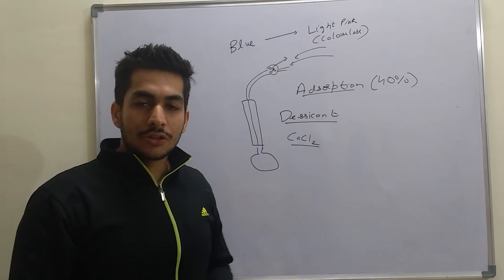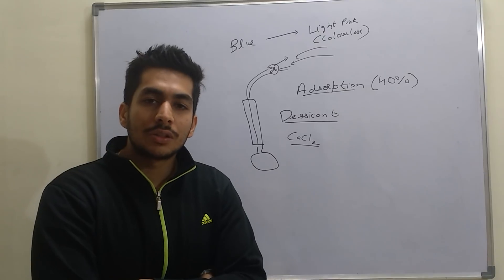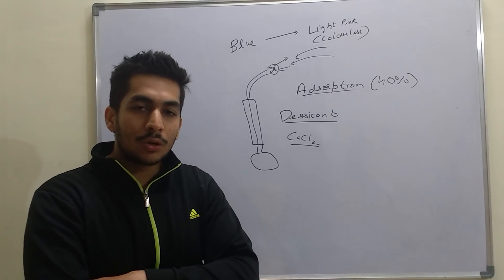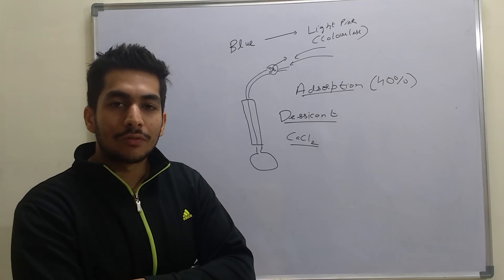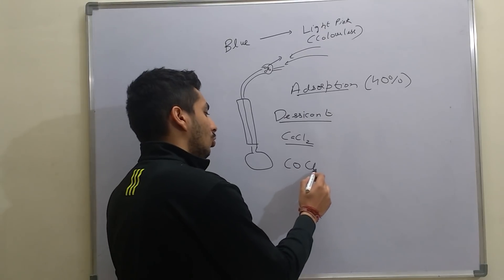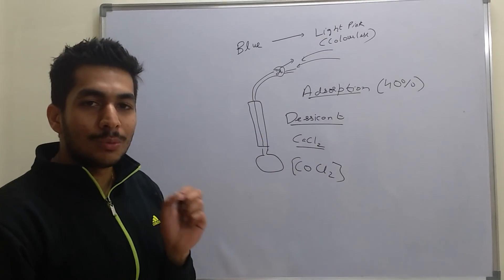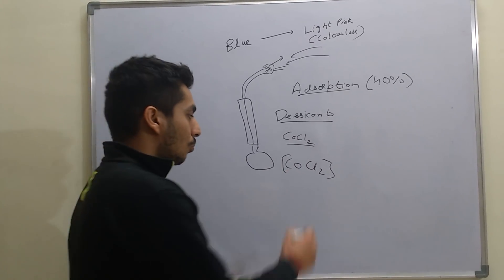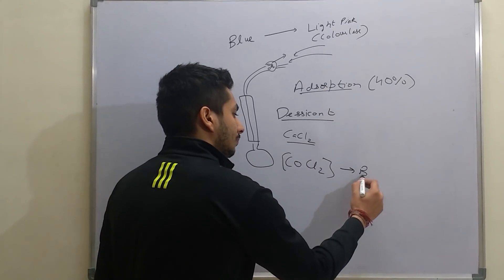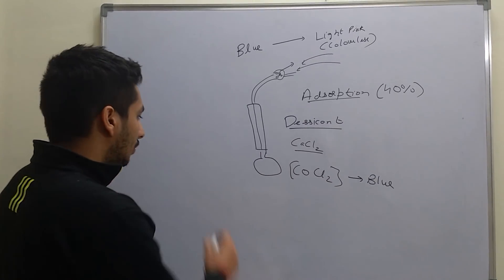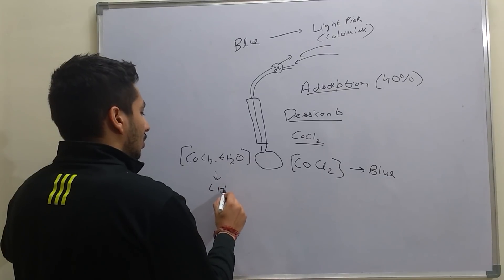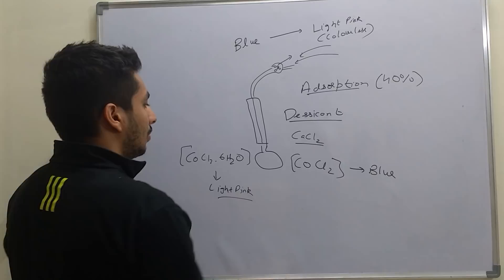So why is this color change taking place? Because color change can only take place in compounds like coordination compounds. Because in coordination compounds, if we change the ligand, then the color of the compound also changes. So for silica, it does not make sense that why is it changing color from blue to light pink. And the reason is that we add a small coordination compound to this silica, which is known as Cobalt Chloride. Cobalt Chloride we add to this silica, small amounts of Cobalt Chloride. So what does this Cobalt Chloride do is, this Cobalt Chloride is actually responsible for the color. In dehydrated form, this Cobalt Chloride, basically this Cobalt Chloride is blue in color. But as this Cobalt Chloride absorbs water, it changes into CoCl2·6H2O. That is the hydrated form. And this hydrated form is actually light pink in color.